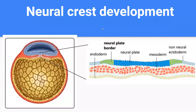On the left, we have a schematic diagram of an embryo at the end of gastrulation. If we zoom in on this area right here, we can clearly see that at this point the three germ layers — the ectoderm, mesoderm, and endoderm — are completely formed.